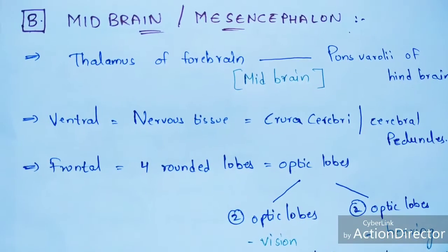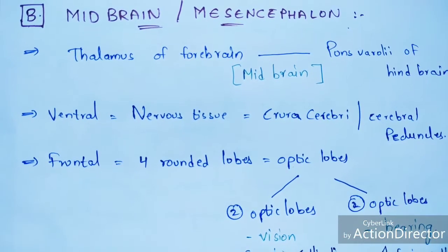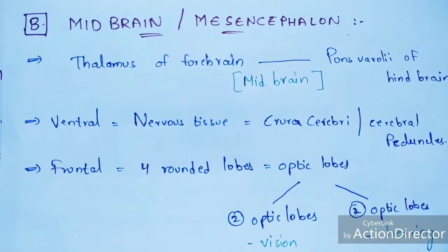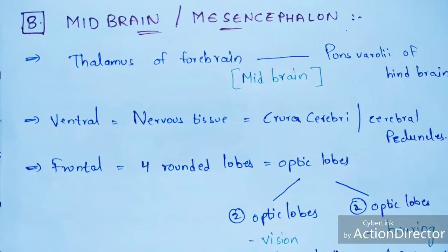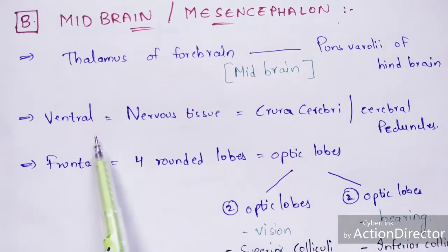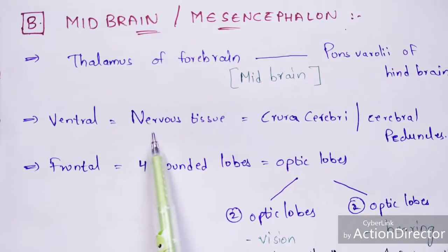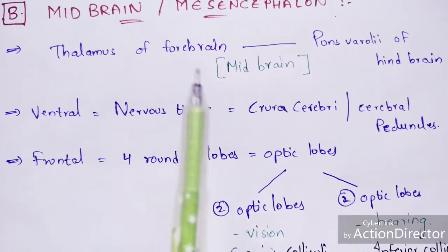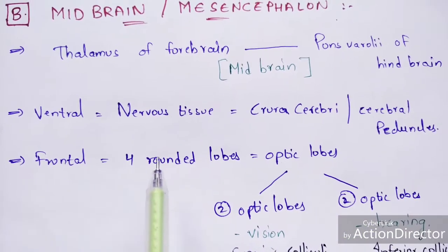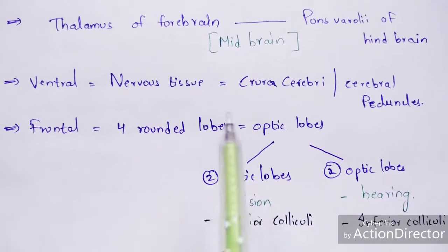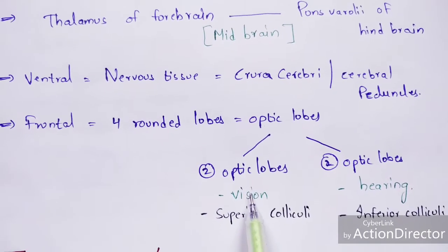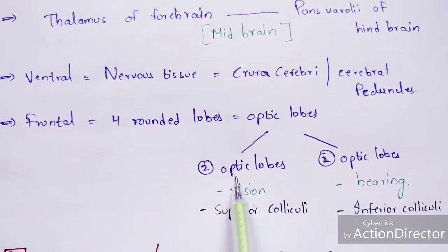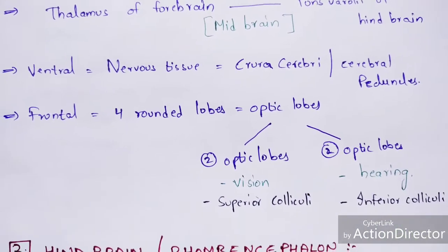The midbrain consists of two parts: a ventral part and a dorsal part. The ventral part — the back region of the midbrain — is composed of nervous tissue called the crura cerebri, also known as the cerebral peduncles. The dorsal region consists of four rounded lobes called optic lobes: two optic lobes handle vision (superior colliculi) and two handle hearing (inferior colliculi).